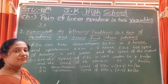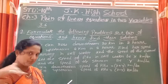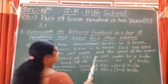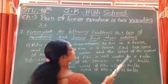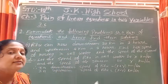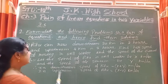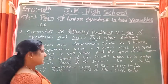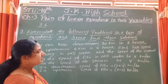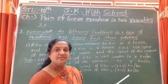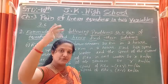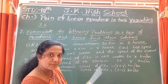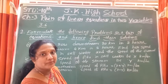In downstream, the speed of Ritu will increase because the stream adds to her speed. So downstream speed of Ritu is x plus y km per hour. In upstream, the stream works against her, so we subtract: upstream speed of Ritu is x minus y km per hour.